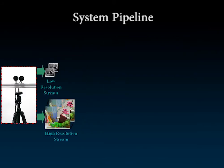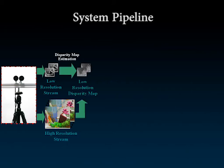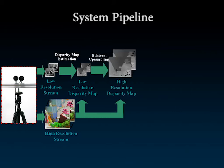Our system begins with the capture of a stereo image pair, composed of one high resolution color image and one low resolution grayscale image. We first downsample the high resolution color image and convert it to grayscale, and recover a low resolution disparity map on the GPU using belief propagation. We subsequently upsample the disparity map to full resolution by applying the fast joint bilateral filter.